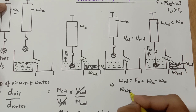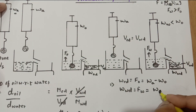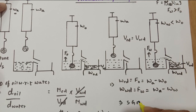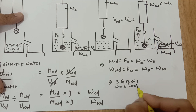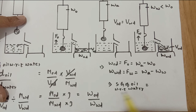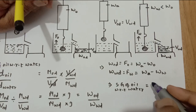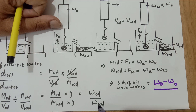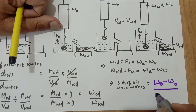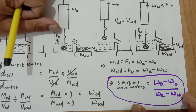Weight of water displaced equals the upthrust by water, which equals weight in air minus weight in water. So the specific gravity of oil, or relative density of oil with respect to water, is equal to WOD over WWD, which becomes: weight in air minus weight in oil, divided by weight in air minus weight in water. This is the formula that we were supposed to derive.